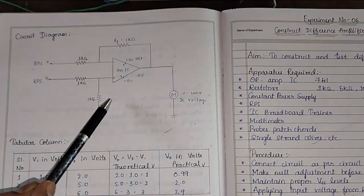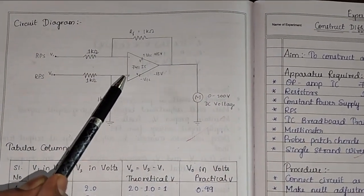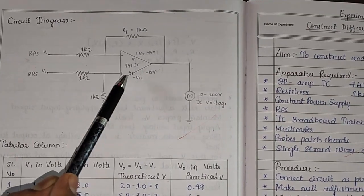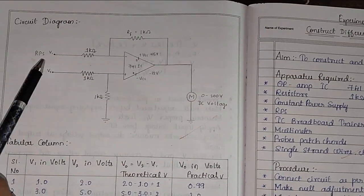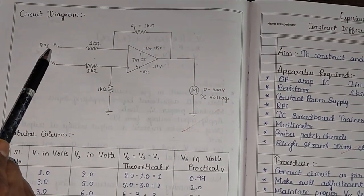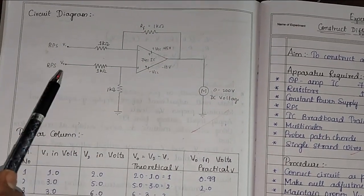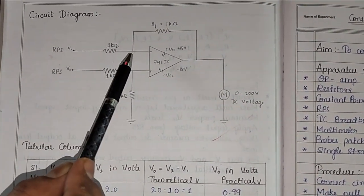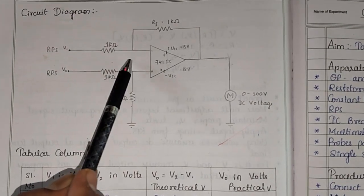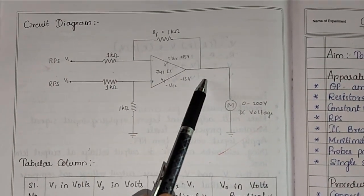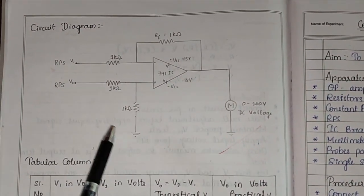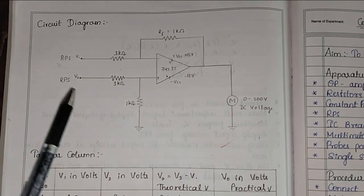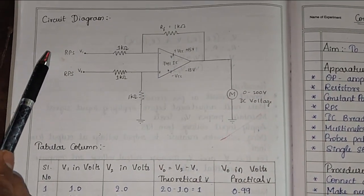In this circuit it consists of IC 741 op-amp. One resistor is connected at pin number 2, two resistors are connected at pin number 3, and a feedback resistor is connected between pin number 2 and pin number 6. All the resistor values are 1 kilo ohm.